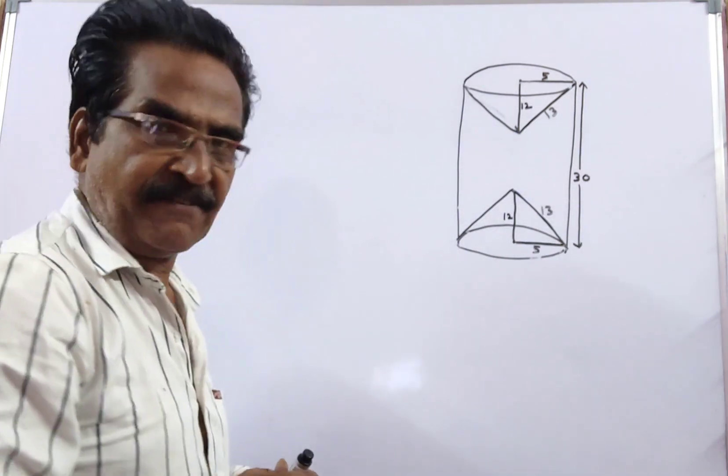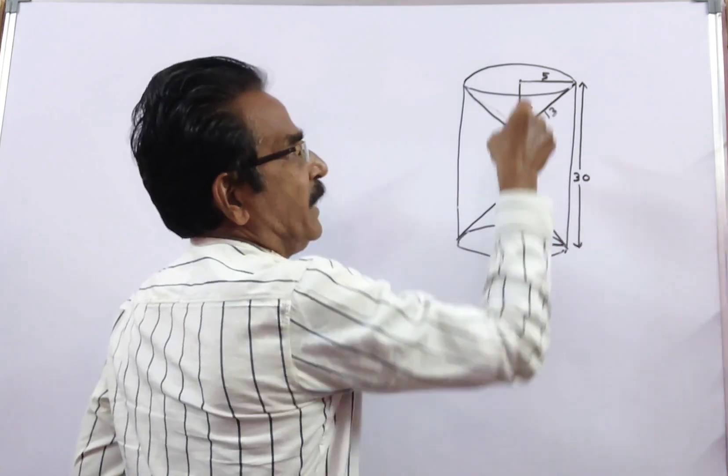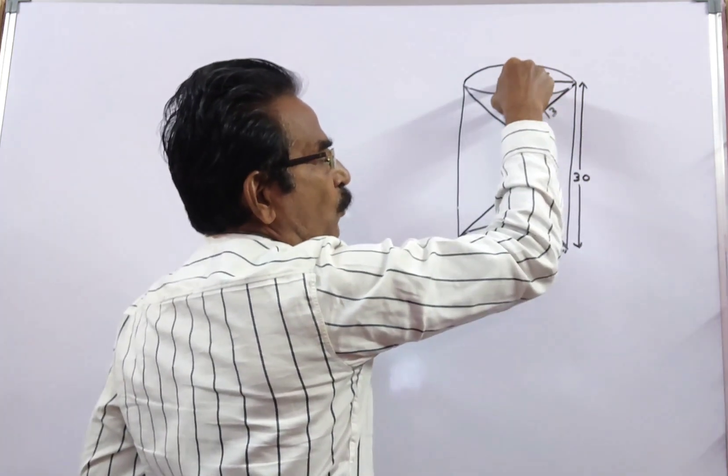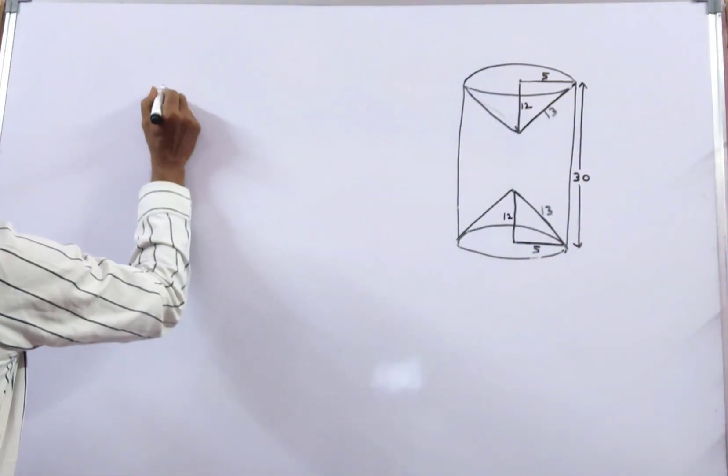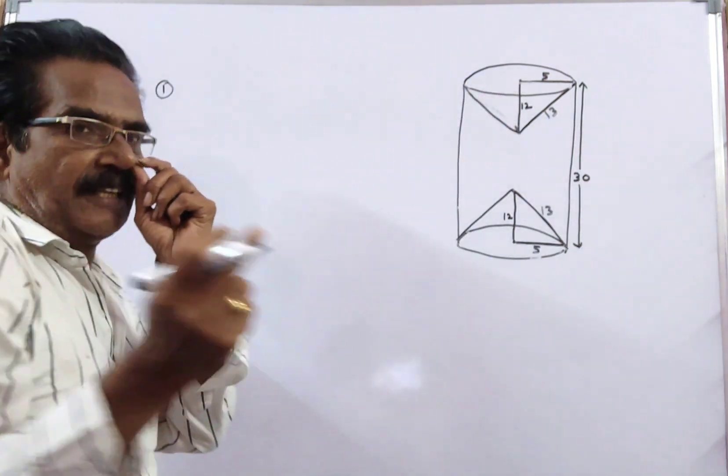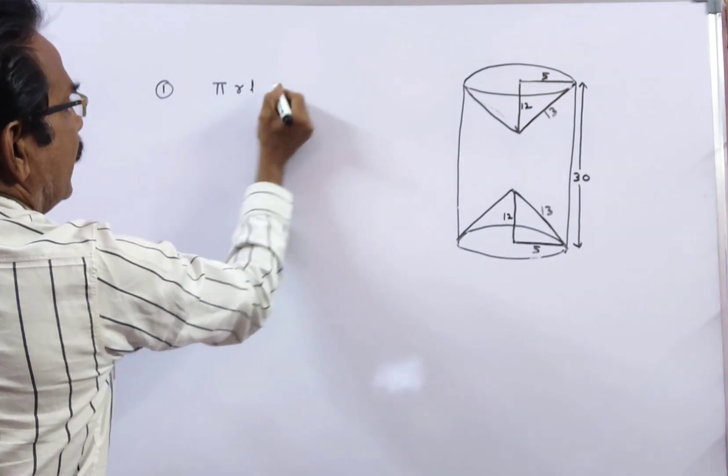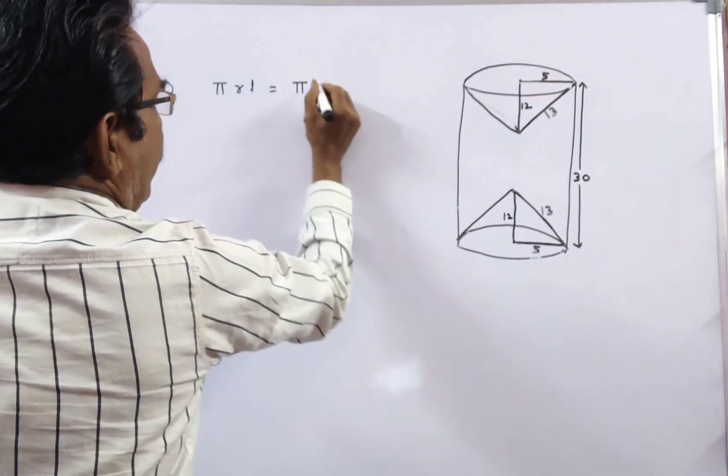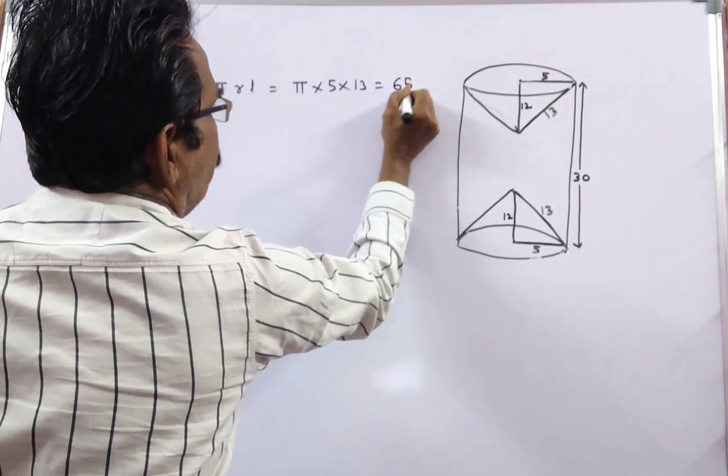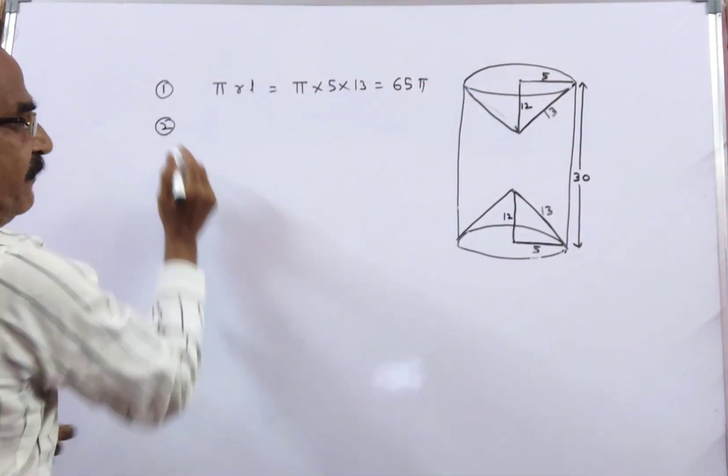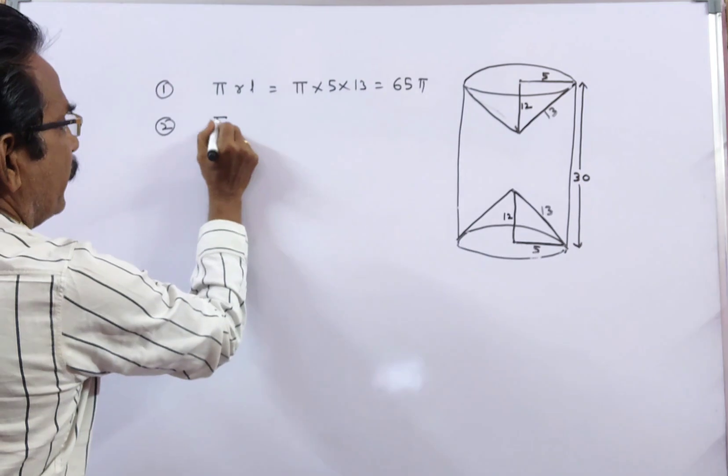Now the total surface area of the remaining solid is given by lateral surface area of this cone plus lateral surface area of this cone plus curved surface area of the cylinder. The lateral surface area of cone is given by pi r l. That is equal to pi times radius 5 times l 13, which equals 65 pi. In the same way, the second cone is also 65 pi.